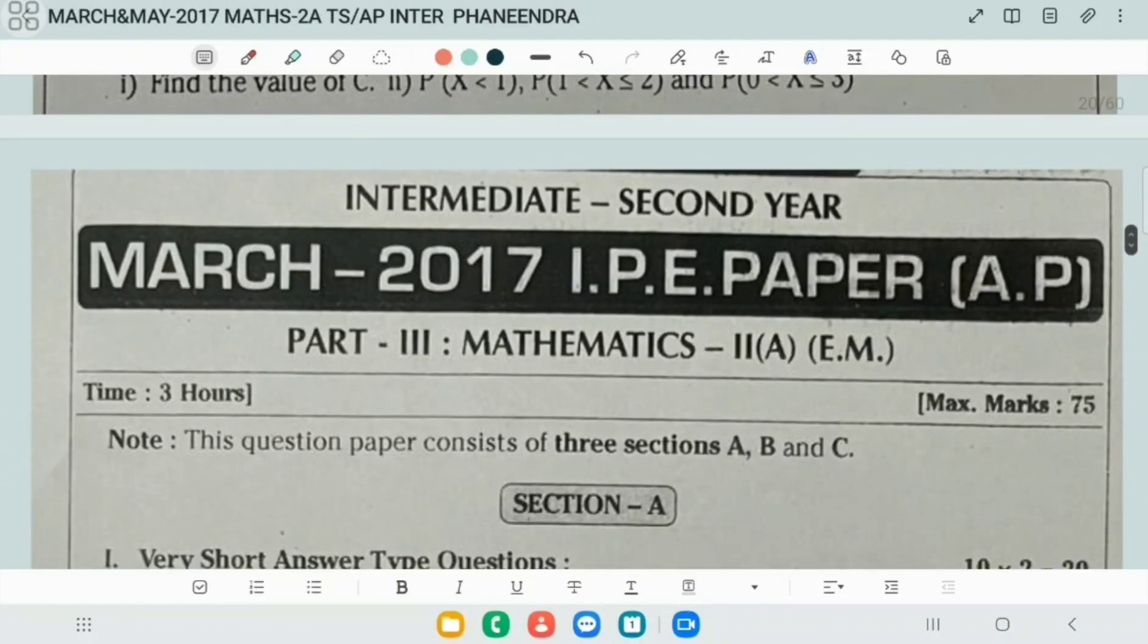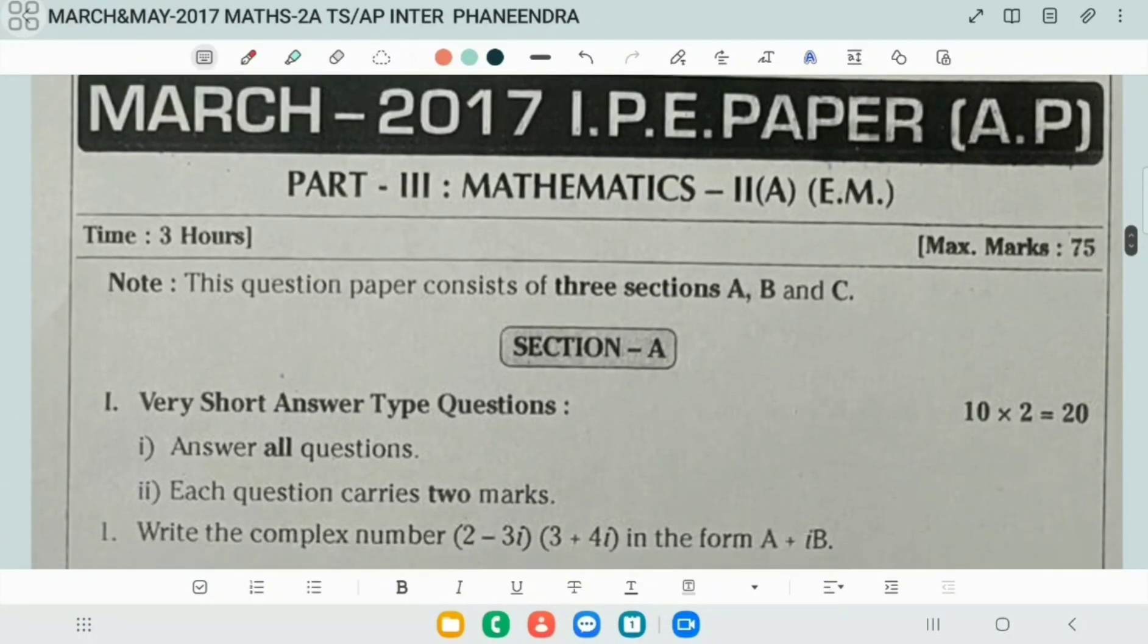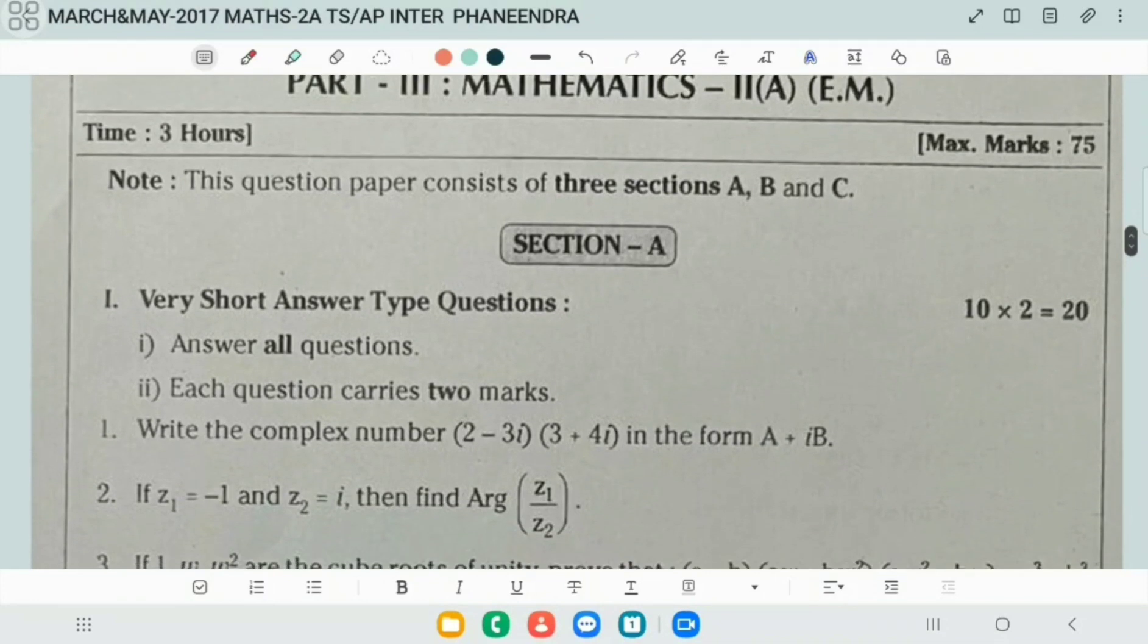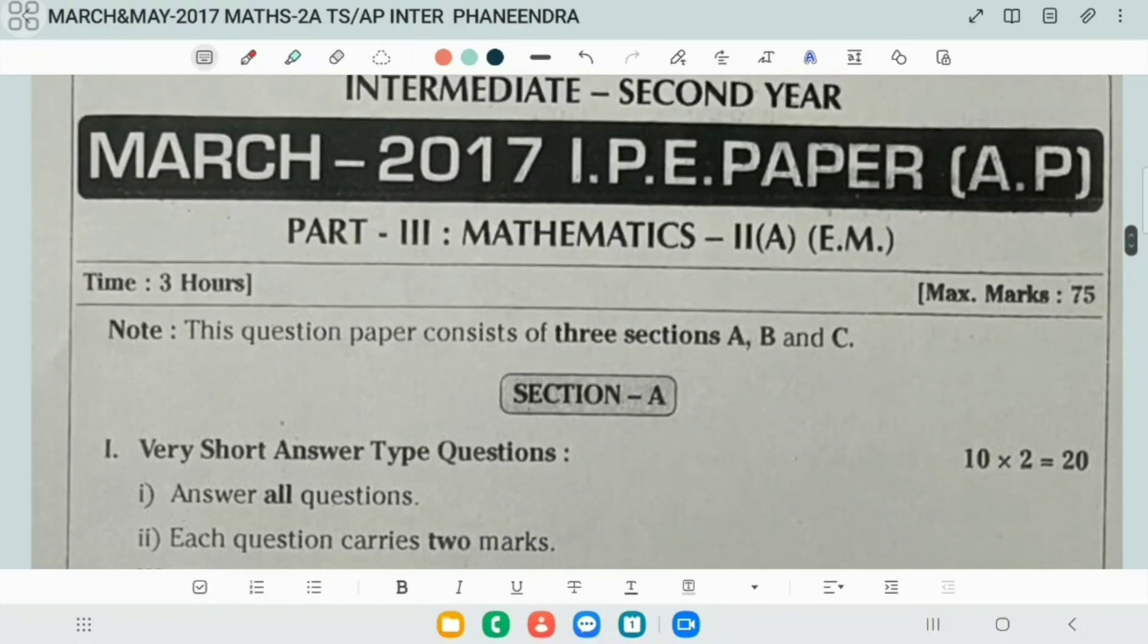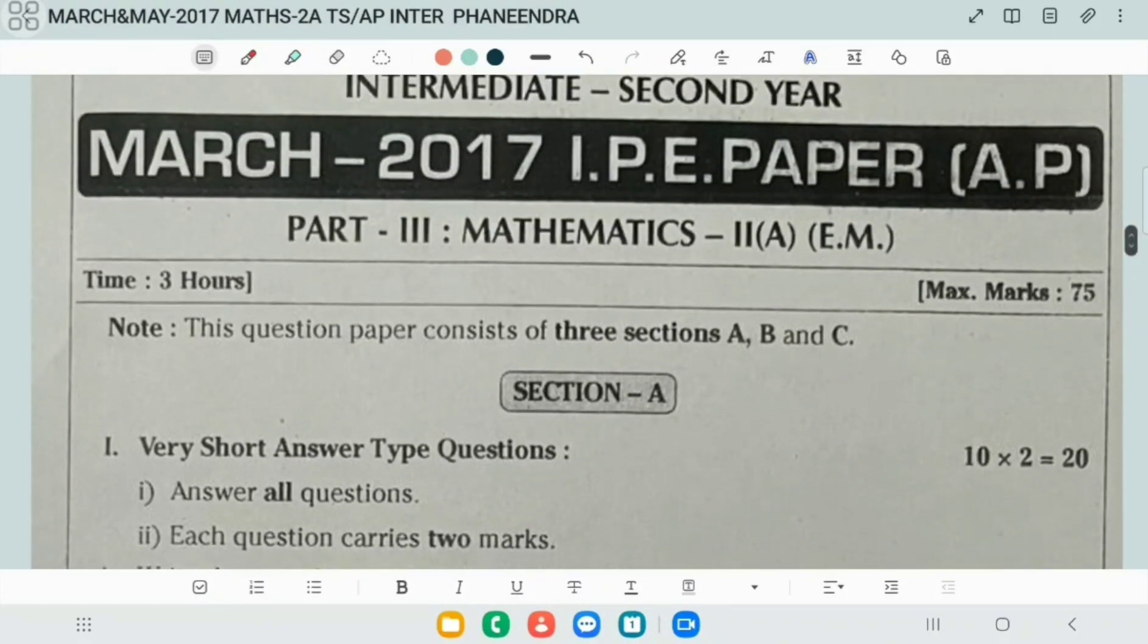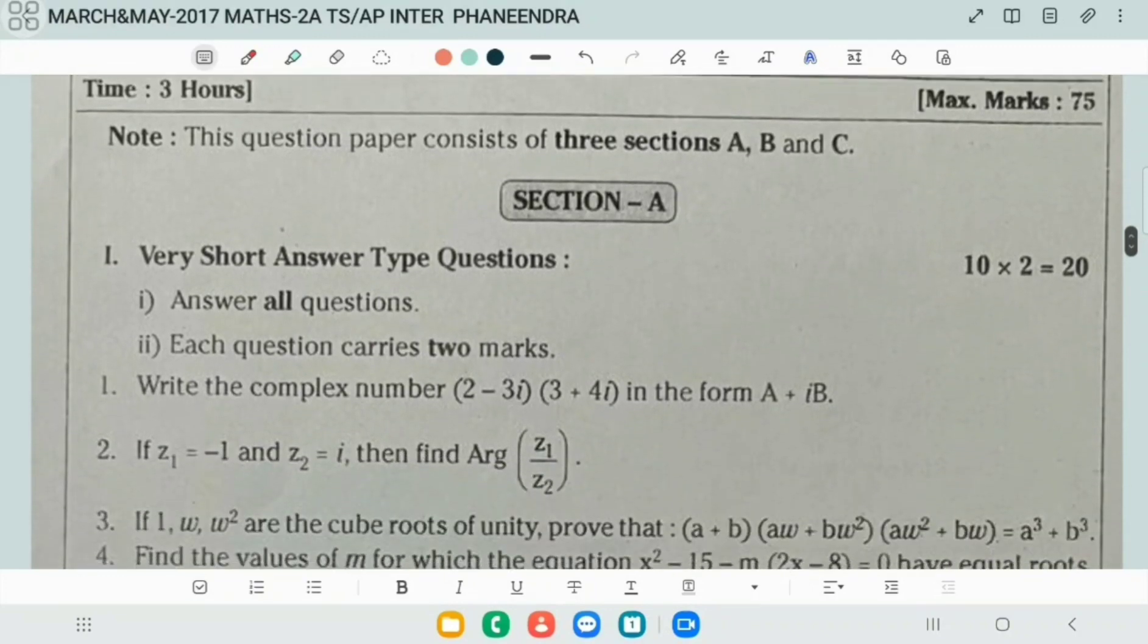Now we'll enter into March 2017 AP paper. Let's go through this, students. March 2017 IP paper, Mathematics 2A.